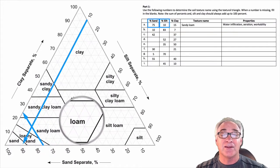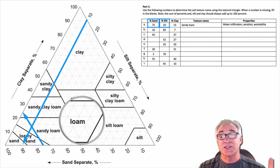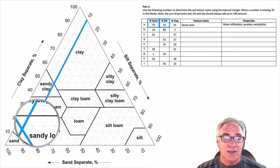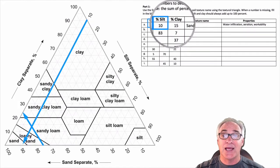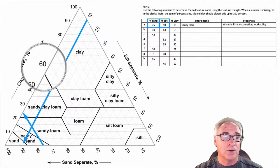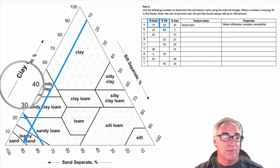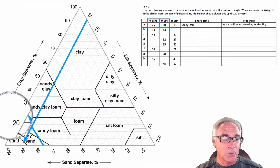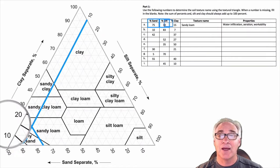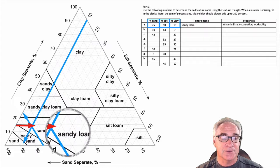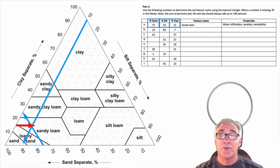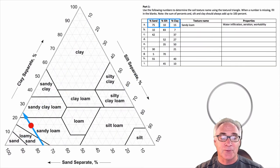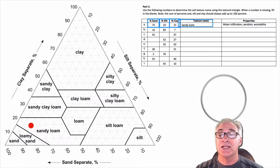A loam soil is kind of the sweet spot — the most ideal kind of soil — with the right amount of sand, silt, and clay. This one obviously has a little more sand. To make sure we're correct, we draw the line at 15% clay, which is over here on the clay separate, between 10 and 20. When all three of those lines intersect, that gives us our texture. We've left a red dot in its place, and it is indeed a sandy loam.